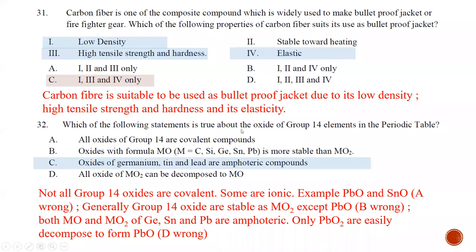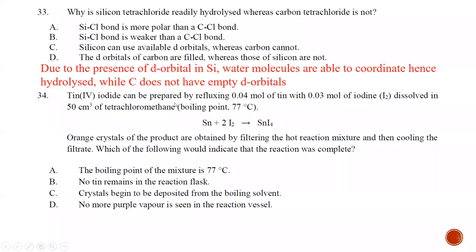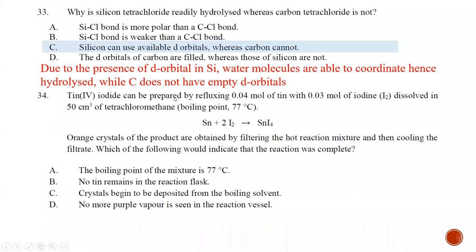Question number thirty-three: why does silicon tetrachloride readily hydrolyze while carbon tetrachloride does not? As already explained, it is due to the presence of empty d orbitals in silicon, which allows coordination of water molecules. Carbon does not have empty d orbitals. The answer is C.